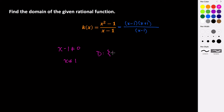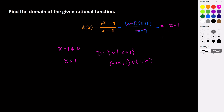So the domain is the set of all x such that x cannot equal 1, or in interval notation: from negative infinity to 1, union from 1 to infinity. This is our domain, even though when we write this in simplest terms it acts like a linear function — and we know a line has a domain of all real numbers. But this rational function has something that happens at x equals 1, which is called a removable discontinuity. We'll talk more about that in another video.